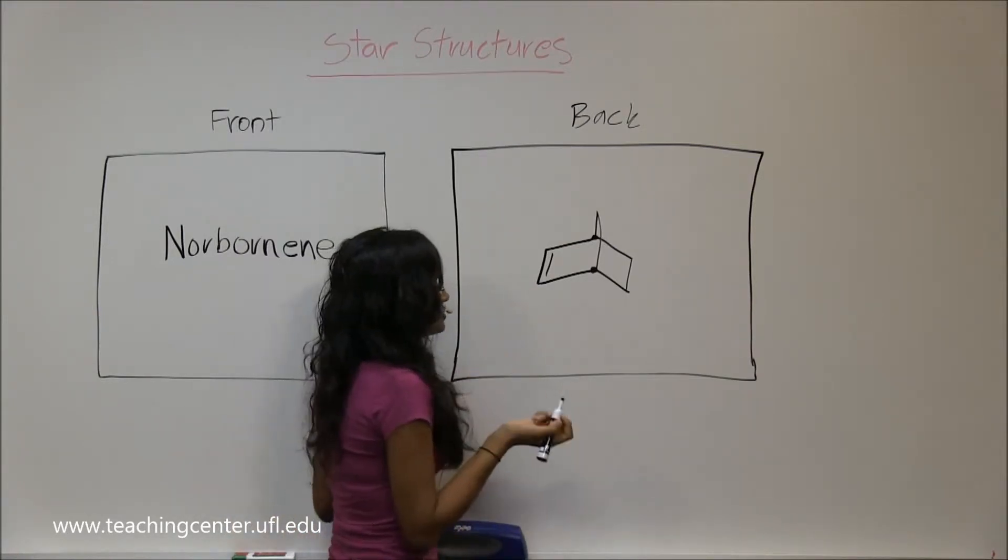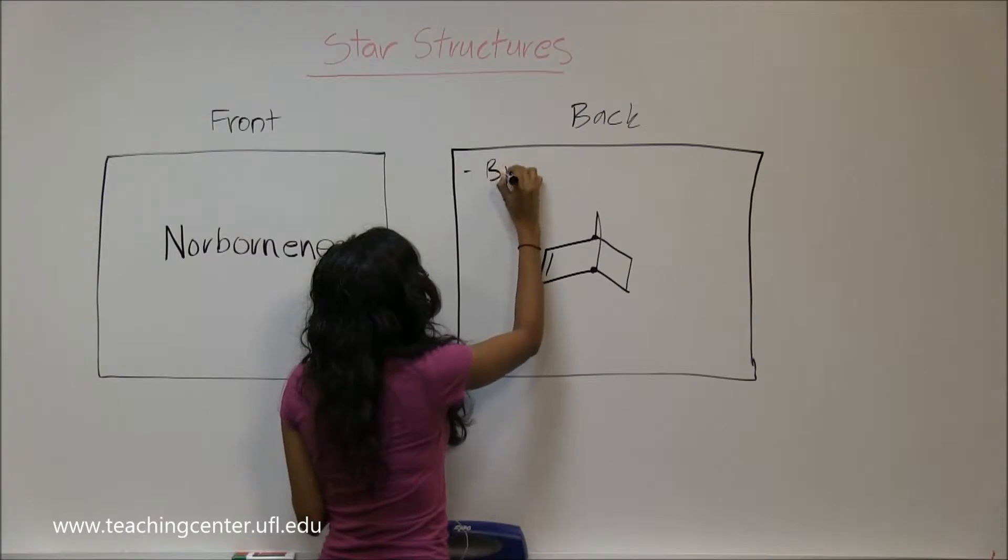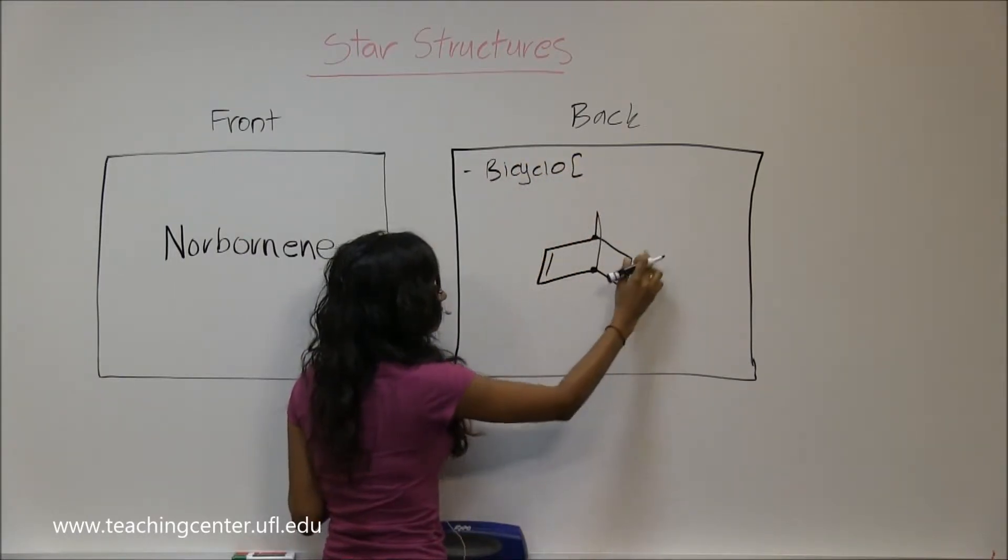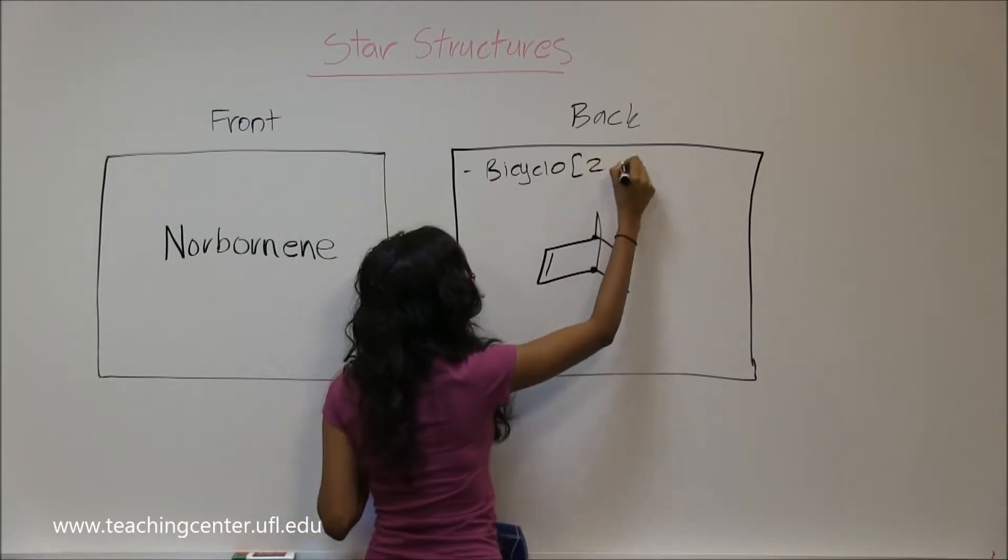Okay, so how would you name this? You have bicyclo, then we have one, two, one, two, so that's two and two, and you have one on top.